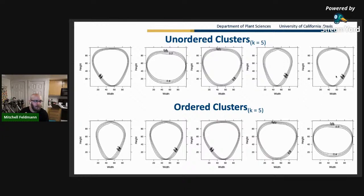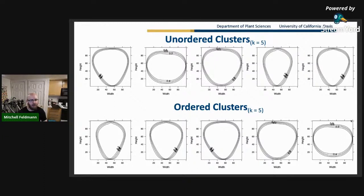Here's an example from k-means output where we have clusters one through five going left to right. Using the Principle Progression of K Clusters (PPKC), you get an ordering that makes sense and actually matches what people have said in the strawberry literature when using shape as an ordinal trait.